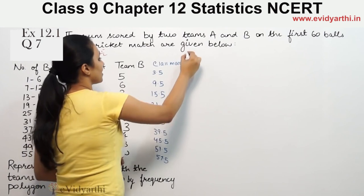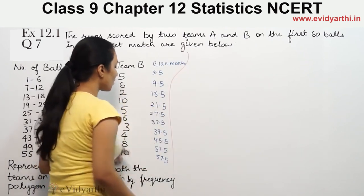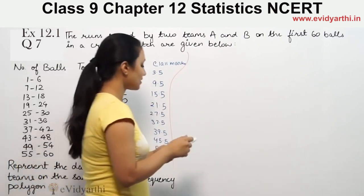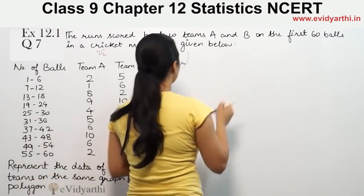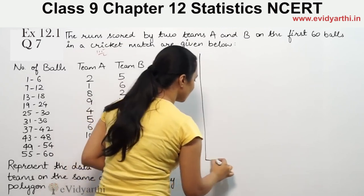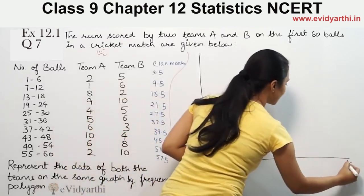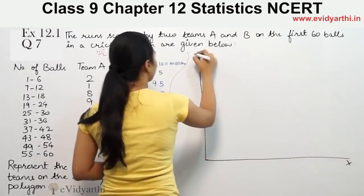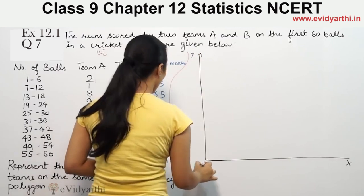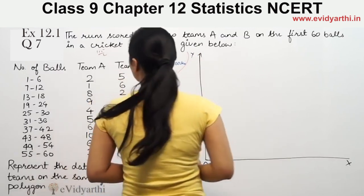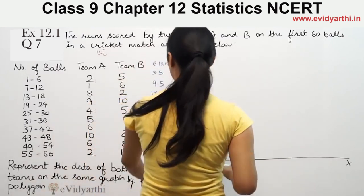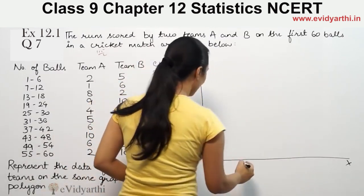Now we will make the frequency polygon. We set up the graph with the y-axis and x-axis, starting from 0. We will mark the class marks on the x-axis.